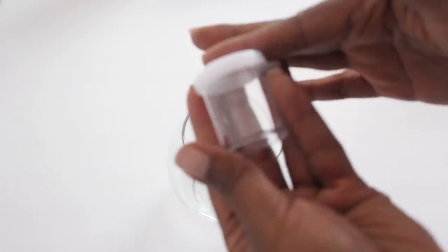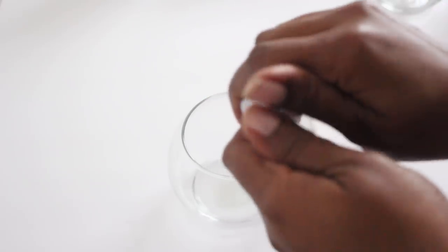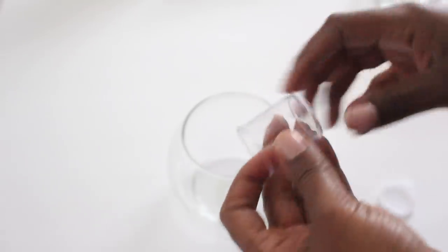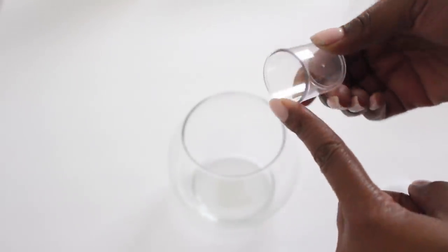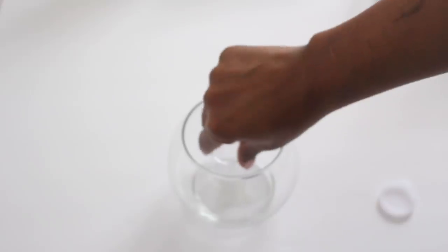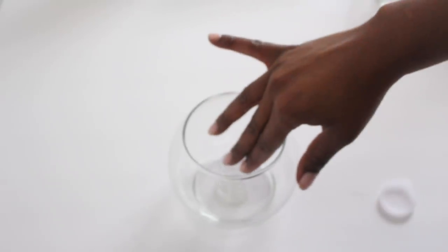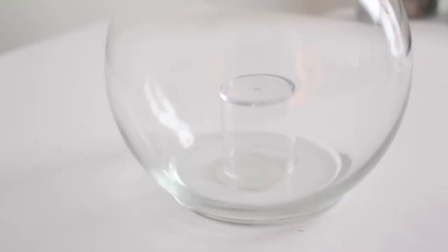As an alternative, you can use this storage container. You would simply remove the lid and put E6000 or hot glue on the bottom and place it in the center. This is what it looks like from the side, so it doesn't look bad at all. Now we want to put this to the side and let it dry.